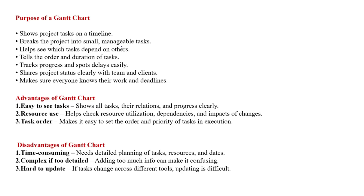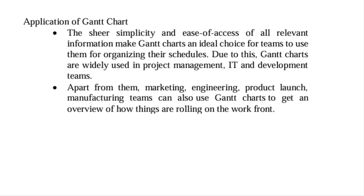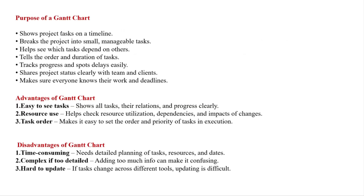The purpose of a Gantt chart is to show project tasks on a timeline. It breaks the project into small, manageable tasks, helps see which tasks depend on others (dependencies), tells the order and duration of each task, tracks progress and spots delays easily, and shares project status clearly with the team and clients so everyone knows their work and deadlines.